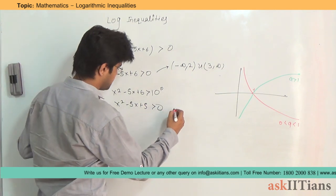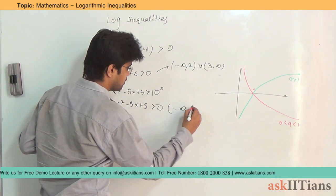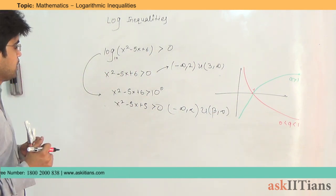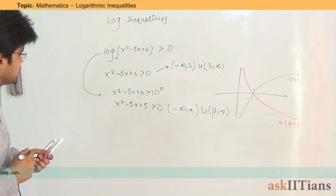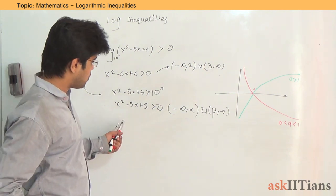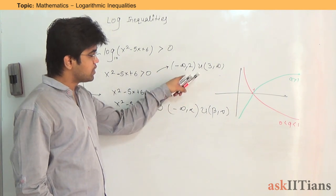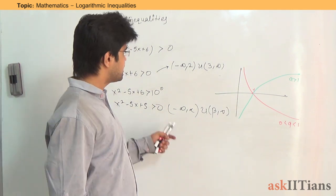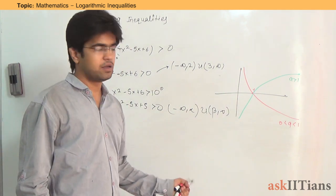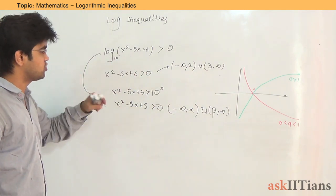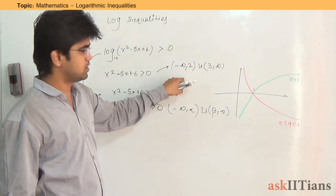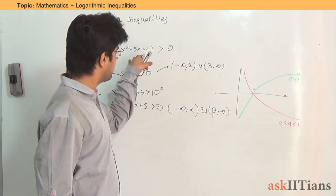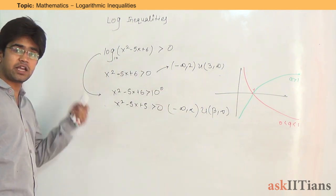The second condition gives x belonging to (−∞, α) ∪ (β, ∞), where α and β are the roots. The key point is that there are two inequalities that must both be satisfied simultaneously, so you take their intersection. When you take the intersection of these two sets, you reach the answer. Remember: when solving one inequality with multiple conditions, always take their intersection.